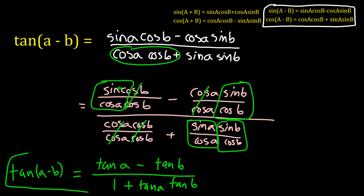So what you could do is, in your little toolbox of trig identities, add tangent of a plus b and tangent of a minus b into your toolbox. This has just been the derivation of what those two identities are.